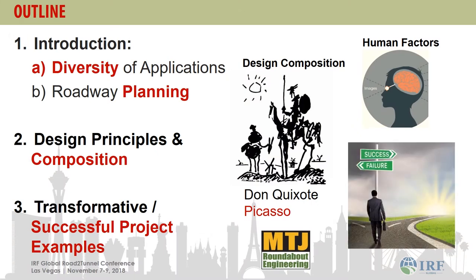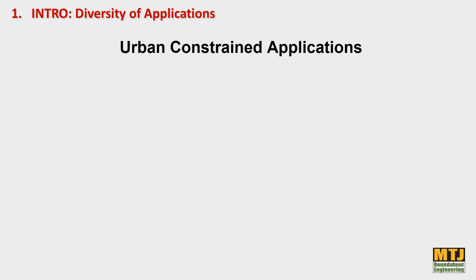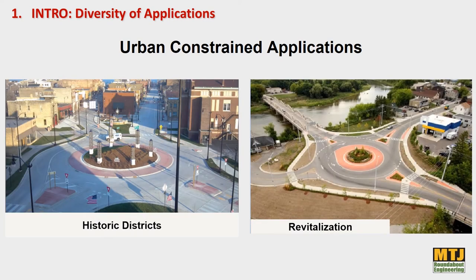I want to leave you with what's necessary for successful projects. Urban constrained applications — you often hear that roundabouts take too much right-of-way, we can't use them, they need to be so big. Well, here are a couple of examples of very constrained, smaller roundabouts.